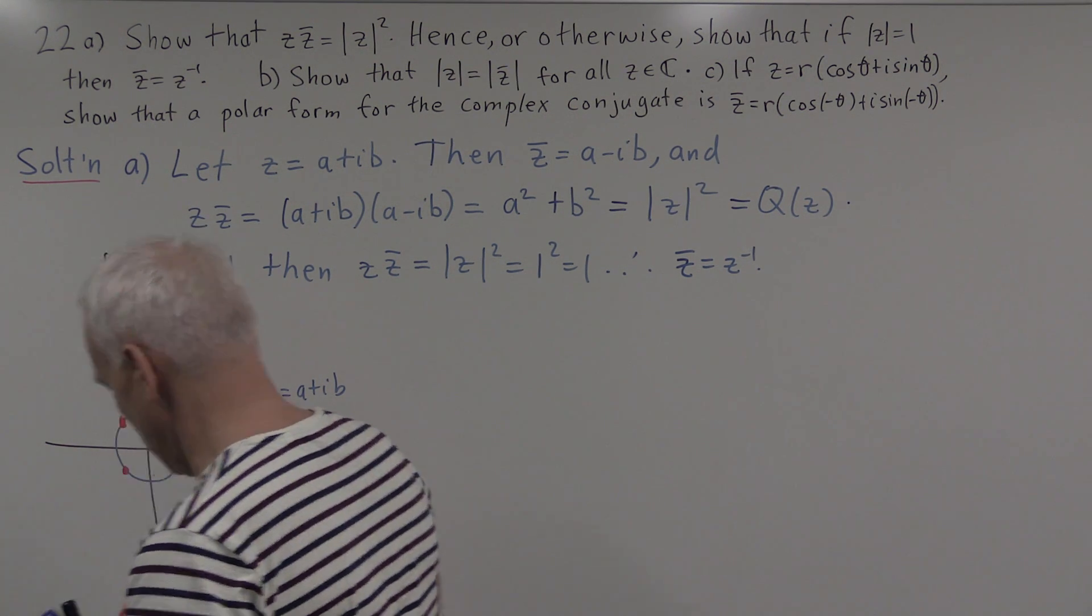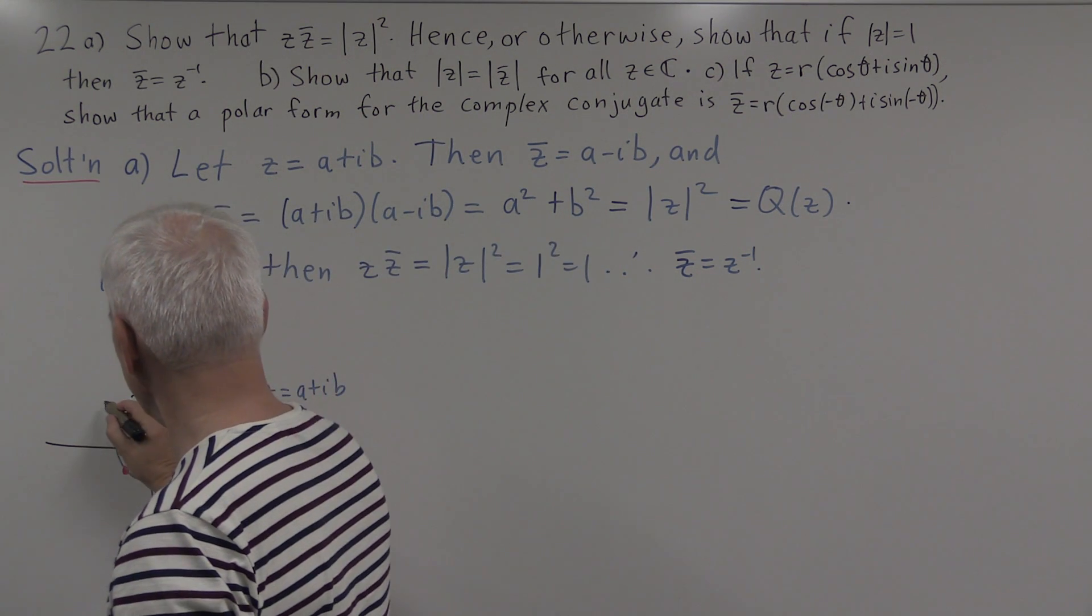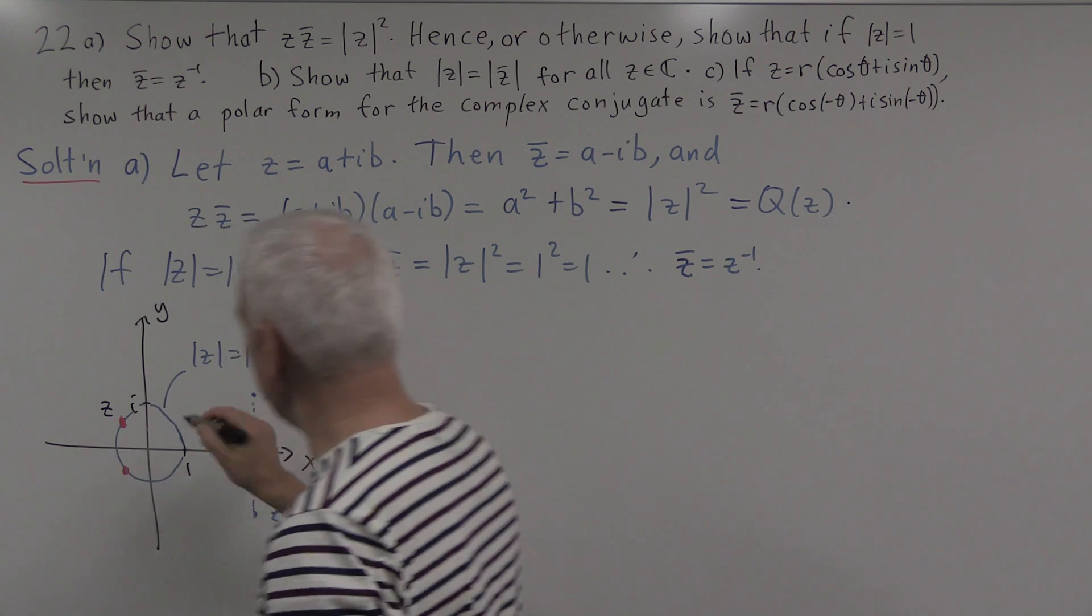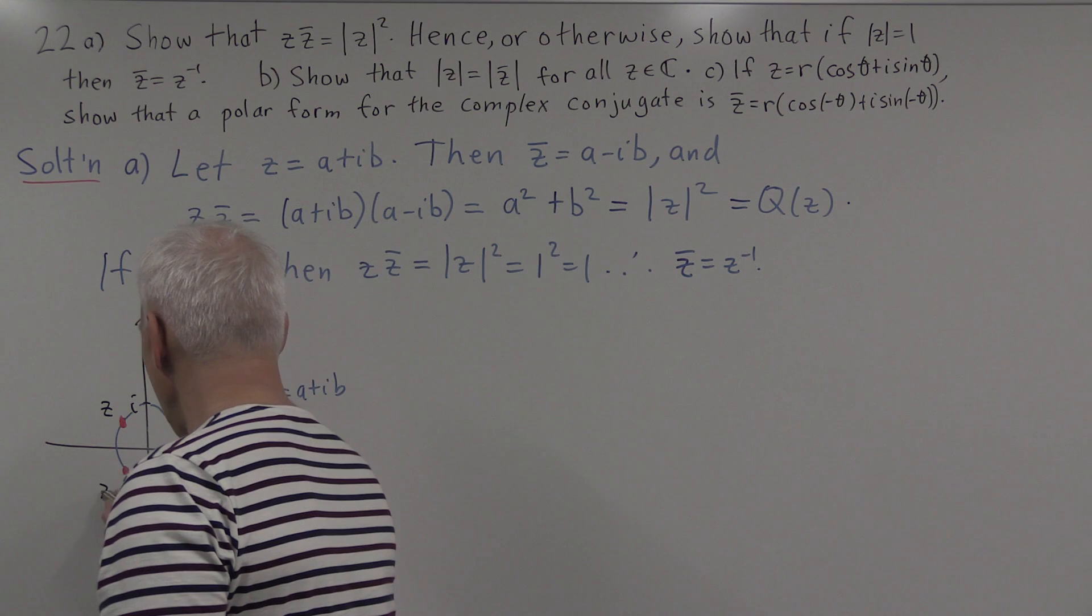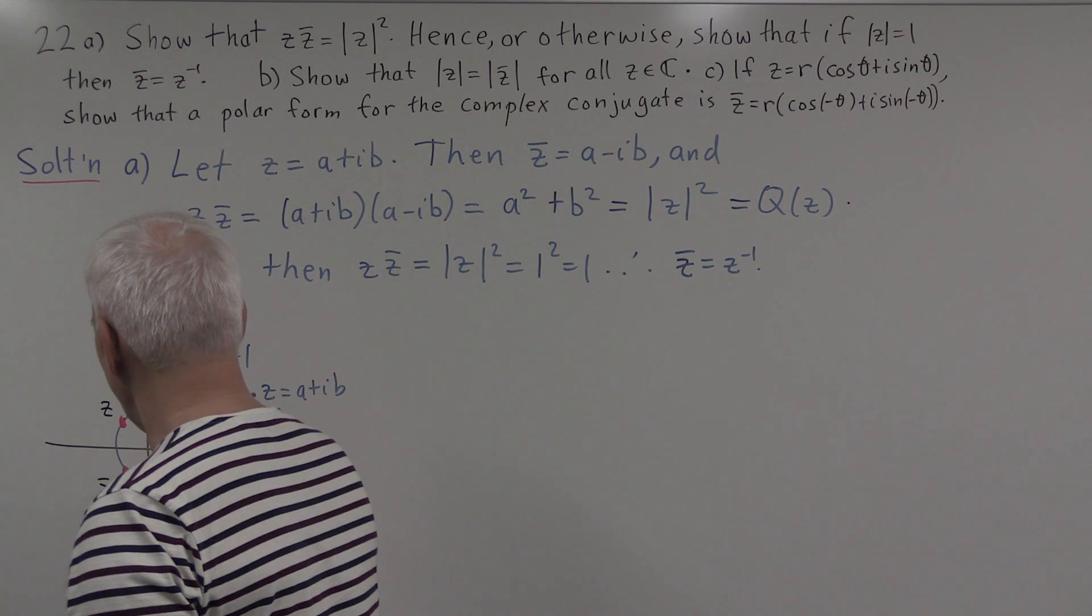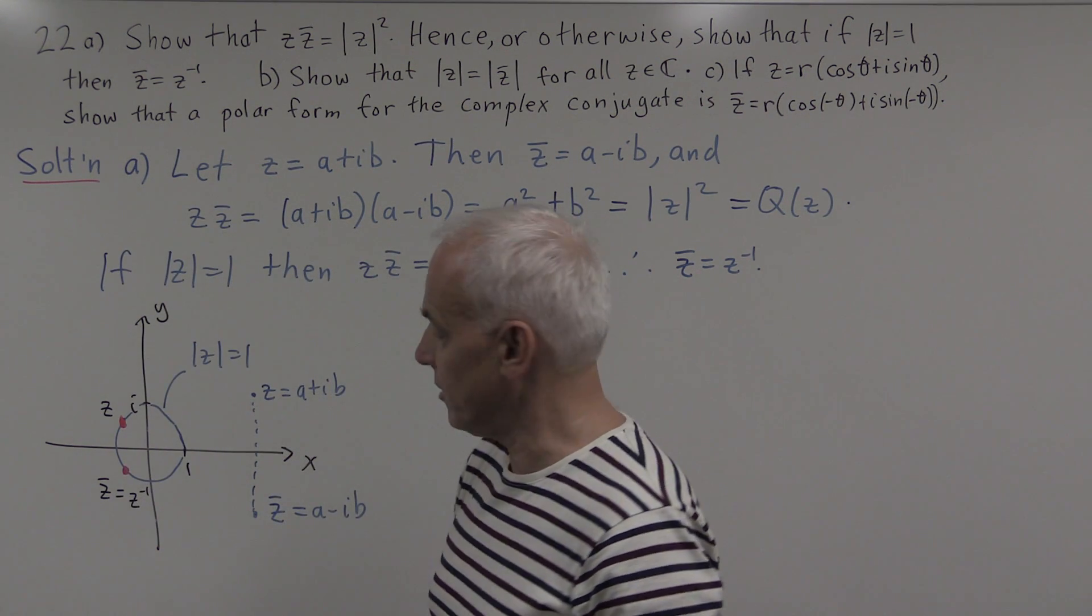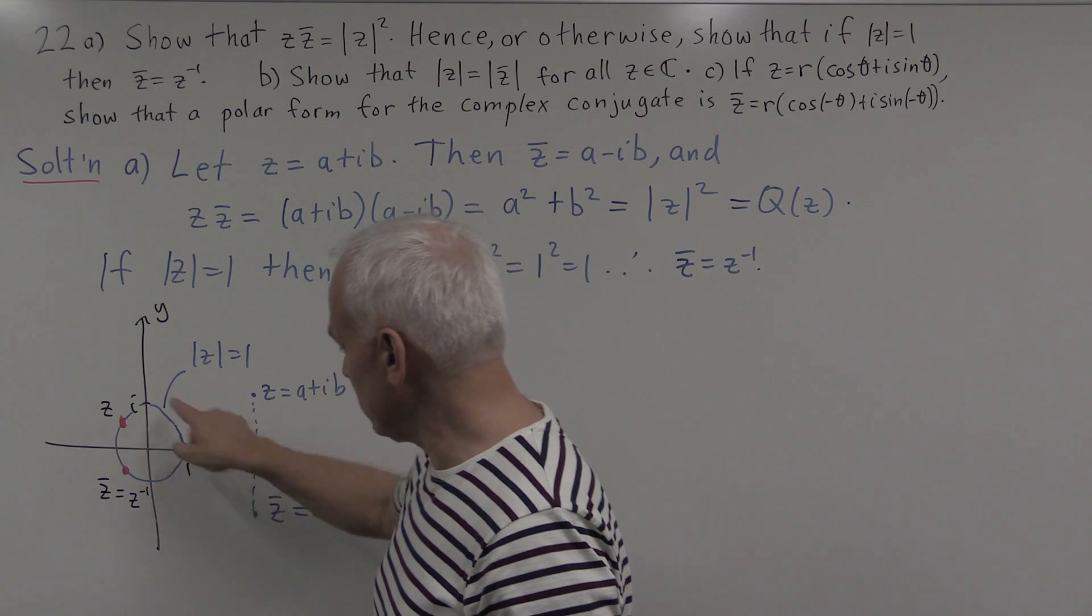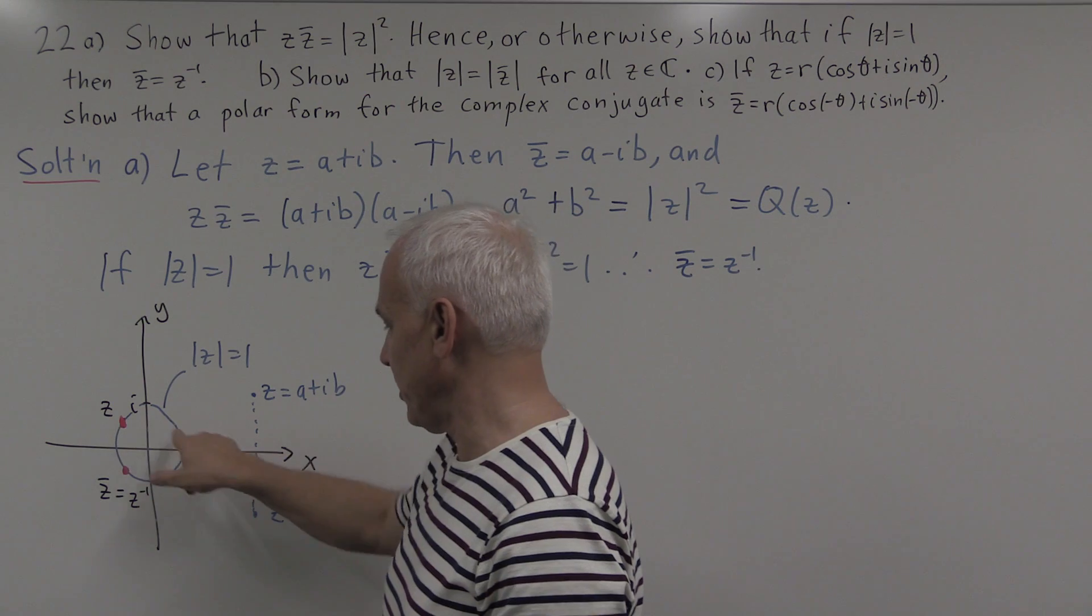And then here is its complex conjugate. So here is complex number z which lies on the unit circle and has modulus 1, and here is its complex conjugate, which in this case actually equals the inverse of the complex number z. So if you multiply this z times z inverse, you're going to get 1.